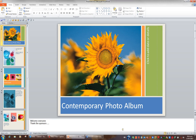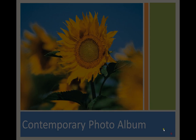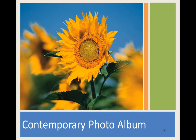To the bottom right of the status bar are four view buttons. The fourth button is a slideshow view. When I'm sitting on slide one in my slides pane and I hit the slideshow button, I'll actually see the slideshow that my audience would see if I was running this presentation.